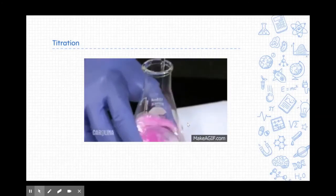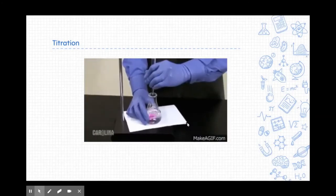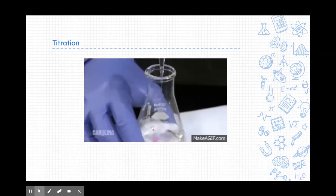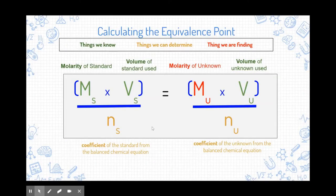Here's what that looks like — you swirl the flask around and use your other hand to slowly add the base to the mix. You'll see that pink color when the indicator changes from clear to pink. Here's the equation we're going to use. You should pause the video right here and write down this information, and then we'll go over it a little bit at a time as we progress through the rest of the slides.